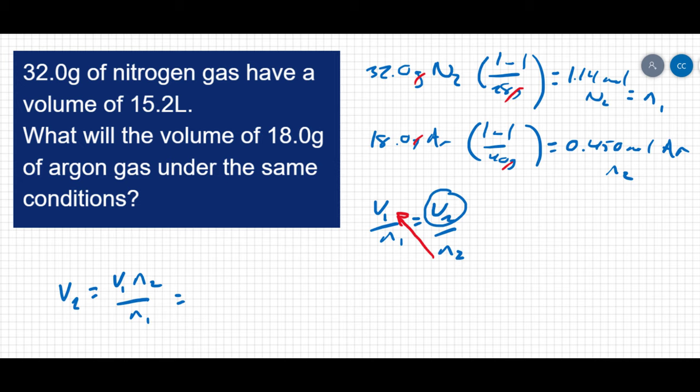So V2 is going to equal V1, which is 15.2 liters, times N2, which we found to be 0.45 moles, all over N1, which we found to be 1.14 moles. You'll see that my moles cancel out. And I'm left with liters. So I get 6 liters of argon gas.